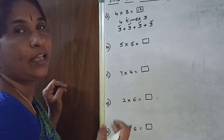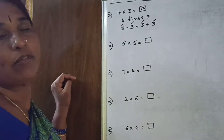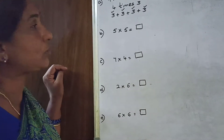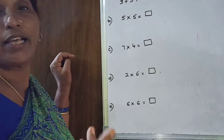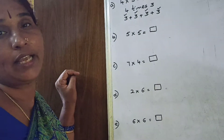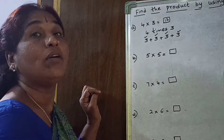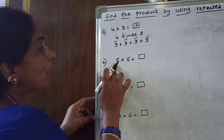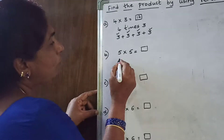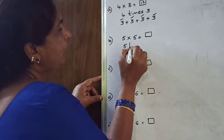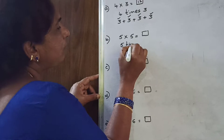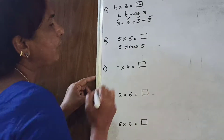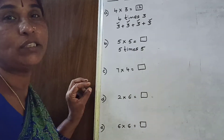And here again, 5 fives are. If you know the 5 table: 5 ones are 5, 5 twos are 10, 5 threes are 15, 5 fours are 20, 5 fives are 25. But here you have to do repeated addition. So 5 times 5 — you have to take 5 five times.